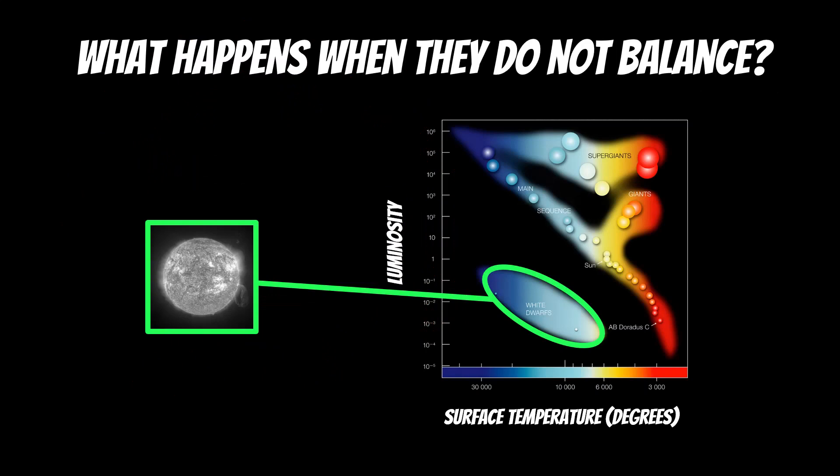Now once that phase has finished, those outer layers essentially dissipate, you get a planetary nebula, and then you're left with the central core and you end up with a white dwarf. Now white dwarfs are very small stars with a very small radius—about the size of the earth—but that means they're not very luminous even though they have very, very high surface temperatures. Now what's happened here?